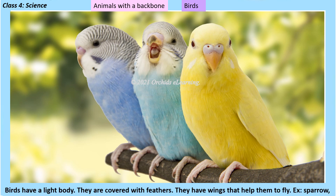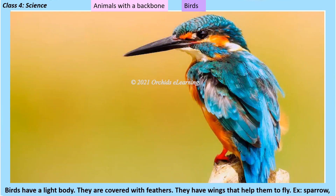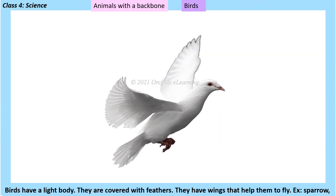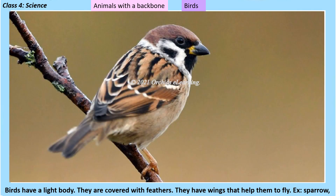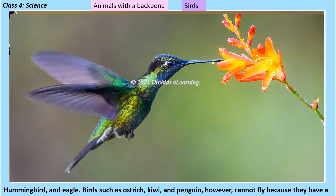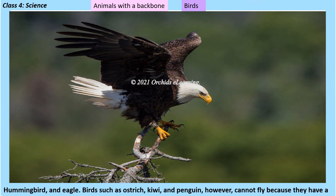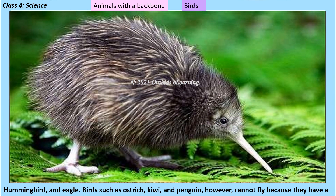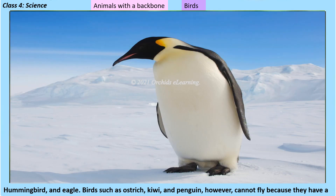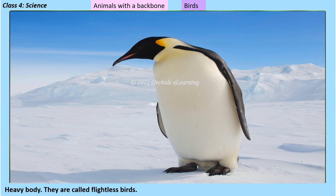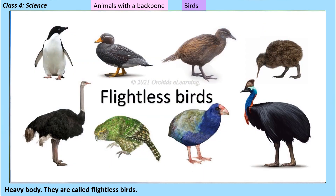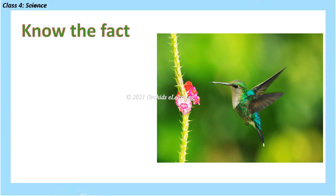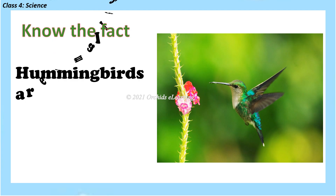Birds have a light body, are covered with feathers, and have wings that help them to fly. Birds such as ostrich, kiwi, and penguin cannot fly because they have a heavy body — they are called flightless birds. Fact: hummingbirds are the smallest birds in the world.